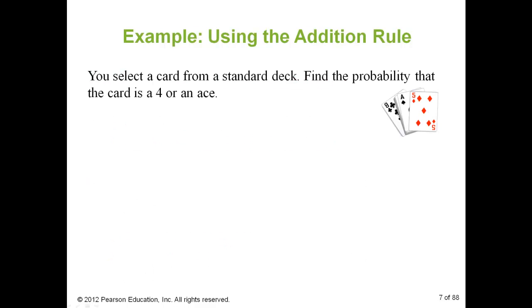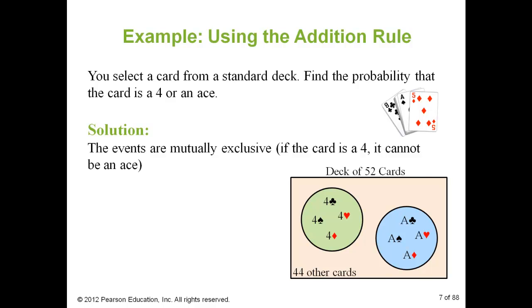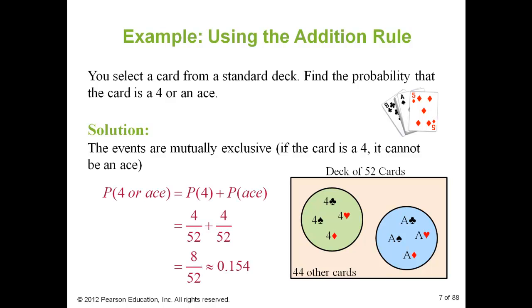I want to know the probability of selecting a 4 or an ace from a deck of cards. They are mutually exclusive — a card can't be both a 4 and an ace. So the probability is the probability of a 4, which is 4 out of 52, plus the probability of an ace, which is 4 out of 52. That gives 8 out of 52, which simplifies to 0.154, so it happens around 15.4% of the time.